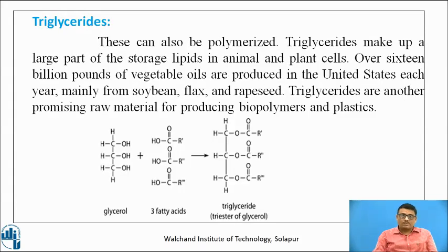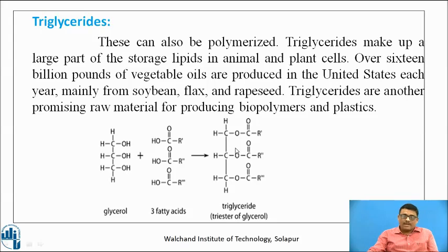Triglycerides are also important examples of biopolymers. This is the structure of triglycerides — glycerol plus fatty acids reacted together form triglycerides, which can also be polymerized. Triglycerides make a large part of storage lipids in animal and plant cells. Over 16 billion pounds of vegetable oils are produced in the United States yearly, mainly from soybean and rapeseed oil. Triglycerides are another promising raw material for producing biopolymers and plastics.